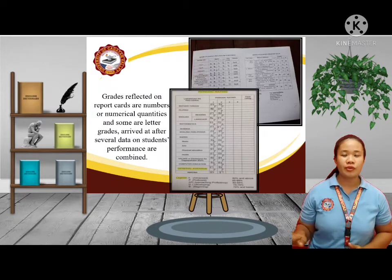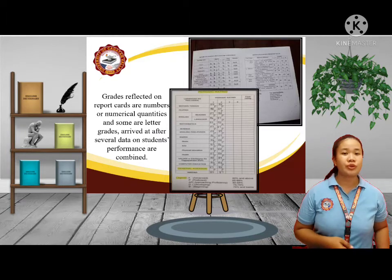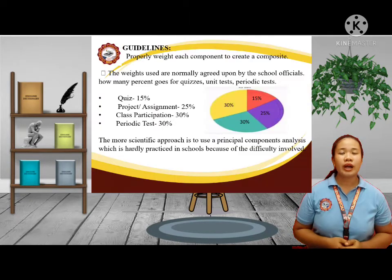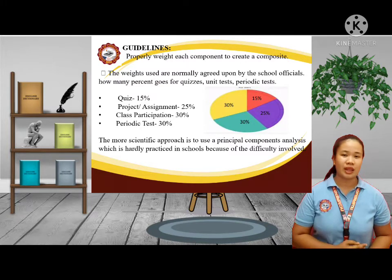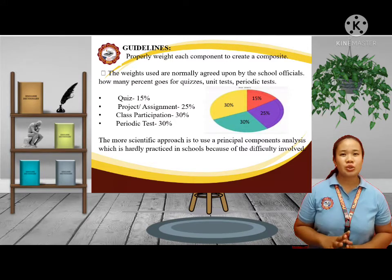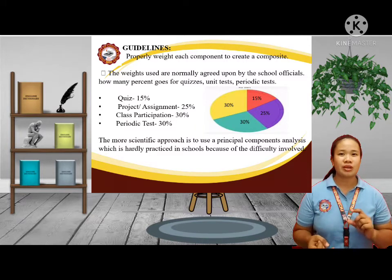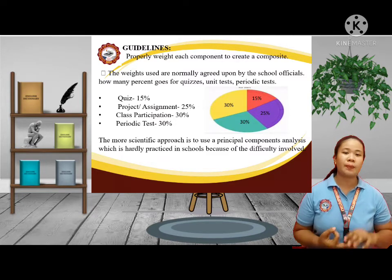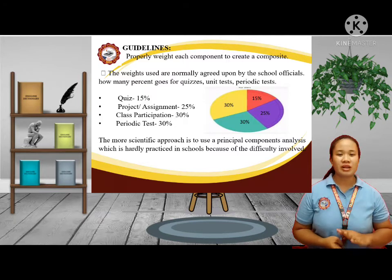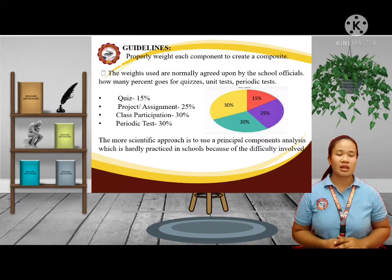Some of you already experienced receiving letter grades in junior high school. There are guidelines on how to combine the data and properly weight each component to create a composite. The weights used are normally agreed upon by school officials — how many percent goes for quizzes, projects or assignments, class participation, and periodic tests. The more scientific approach is to use principal components analysis, which is hard to practice in schools because of the difficulty involved.